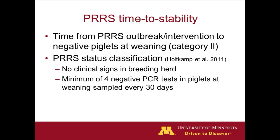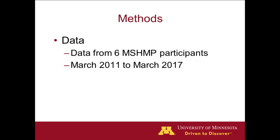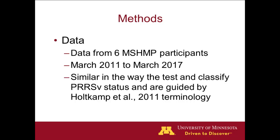Time to stability is defined as the time from the outbreak or intervention to when the farm starts winning negative PCRs. This uses the WHAMP status terminology, and certain criteria that the farm must meet to be declared stable. In this analysis, we use only data from six participants, constrained from March 2011 to March 2017. What makes these six participants special is that the way they test and classify PRRS status is similar among them, guided by the WHAMP terminology.